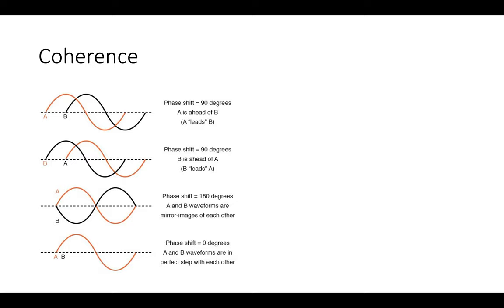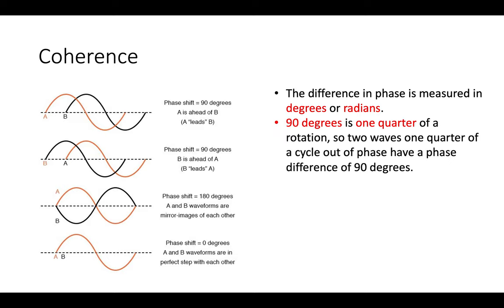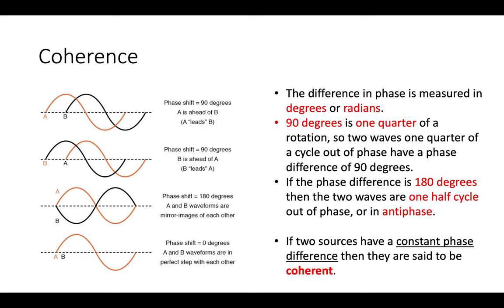The fourth diagram shows the waves in perfect step — exactly in phase. We measure the phase difference in degrees or radians: 360 degrees is a full circle, so 90 degrees is a quarter of a cycle and 180 degrees is half a cycle. A coherent pair of sources is one where the phase difference between them is constant — it doesn't change.